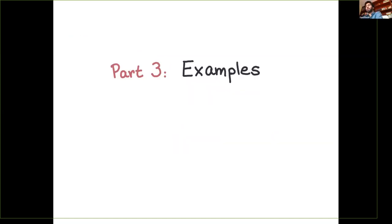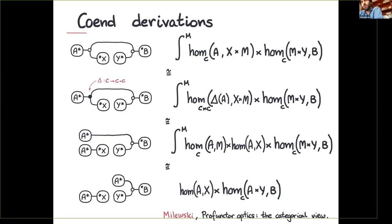The next step is to ask where we can use this. This is the motivation for taking the time to present the monoidal bicategory of profunctors and the monoidal bicategory of pointed profunctors. One example is that all the derivations we were doing before in terms of co-ends can now be done in terms of diagrams.